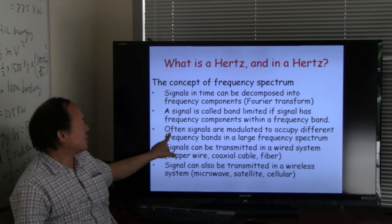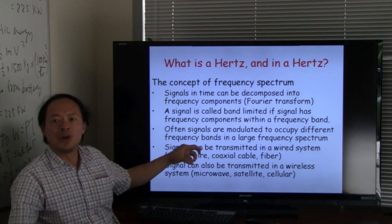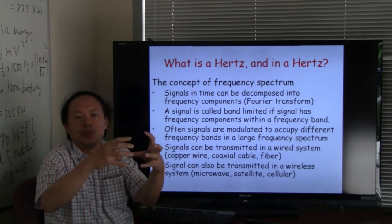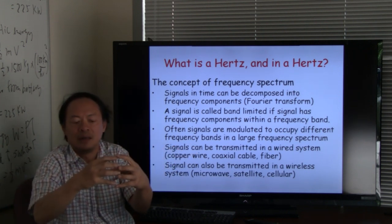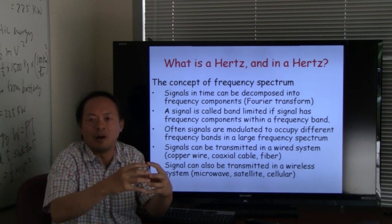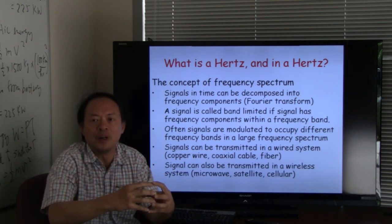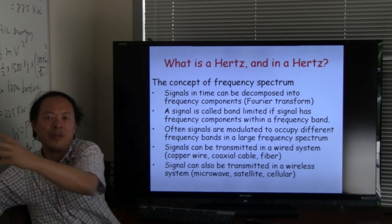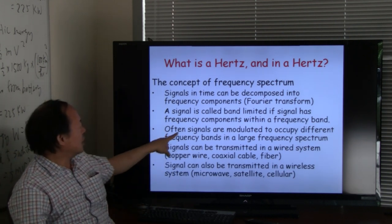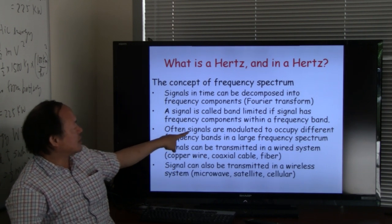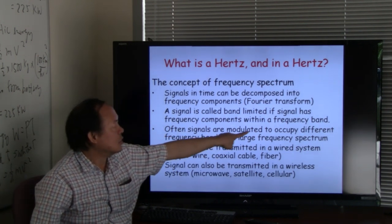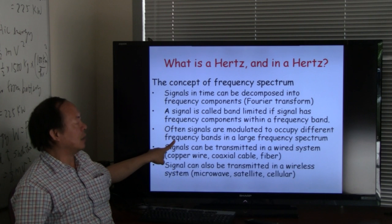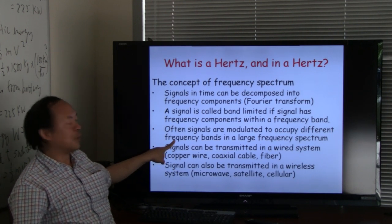That process is called modulation. So you could have a signal that's between 0 and 60 Hertz, and for the purpose of transmission you may move it to 1000 to 1060 Hertz. Therefore, that process involves a signal being modulated to occupy different frequency bands in a large frequency spectrum.